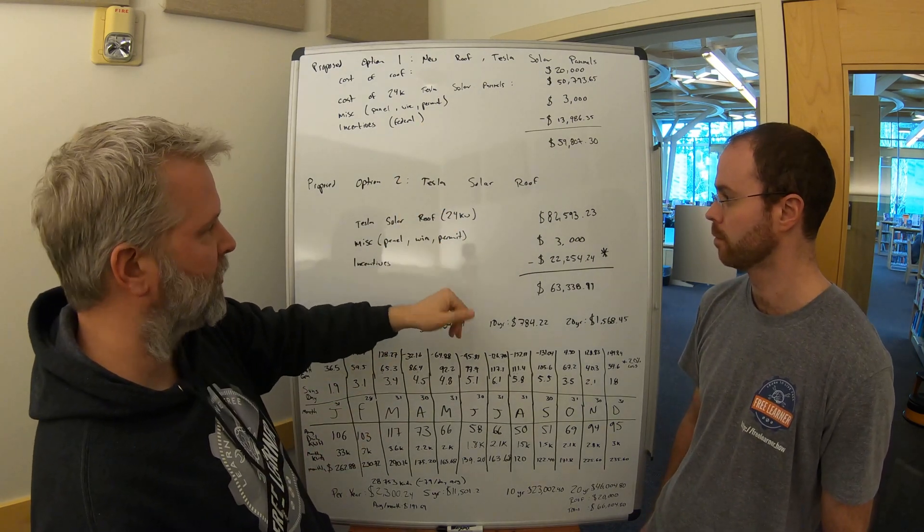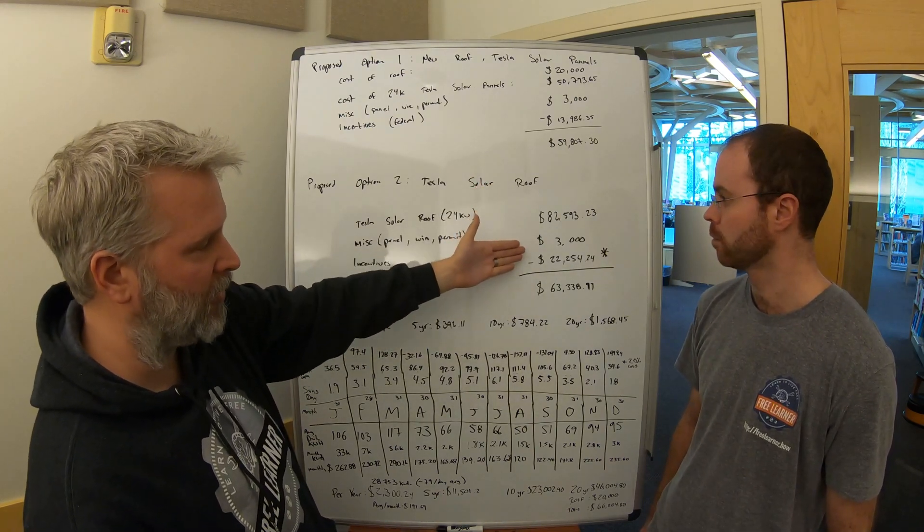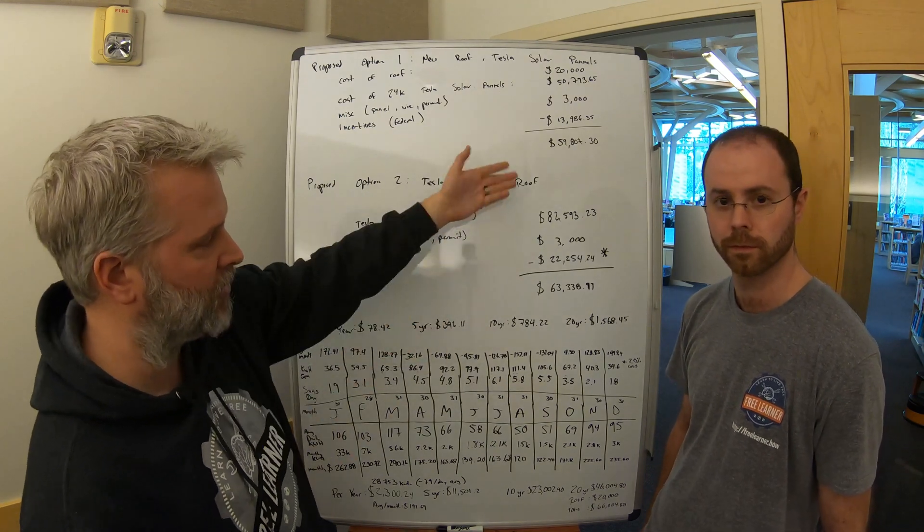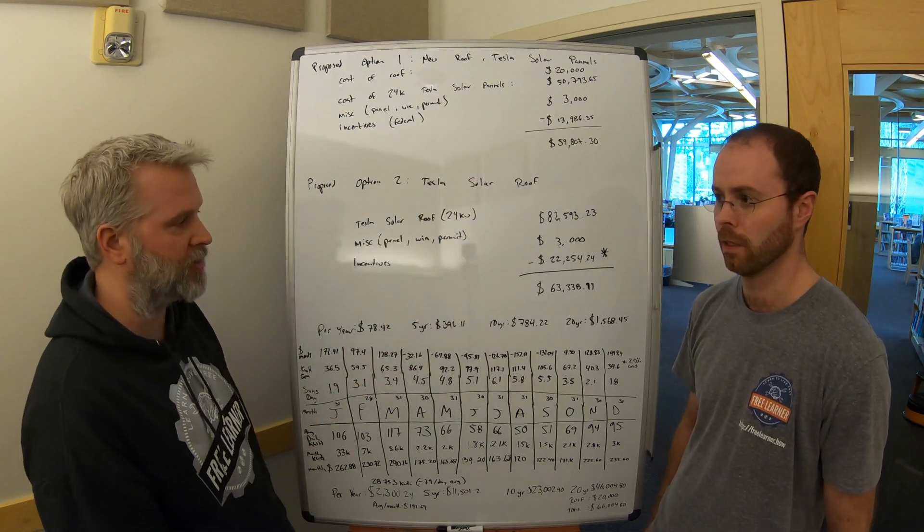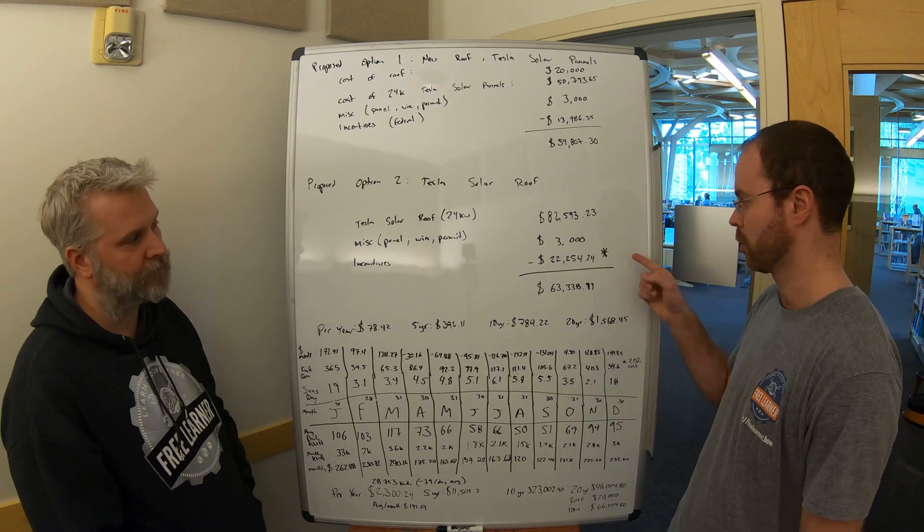Down here is the Tesla roof. So this one has the tear-off, we have the same service panel upgrades, 26%, and so we're at $63,000. So we're within about $4,000 of the two systems.